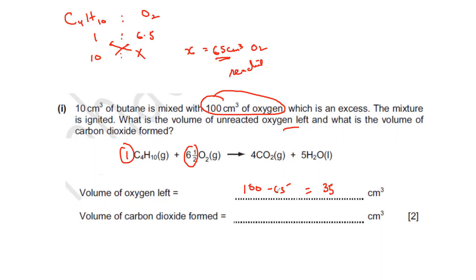To clarify: the total oxygen was 100 cm³. Using the ratio, we worked out that 65 cm³ will react. So 65 cm³ reacts, and the unreacted oxygen remaining is 100 minus 65, which equals 35 cm³.